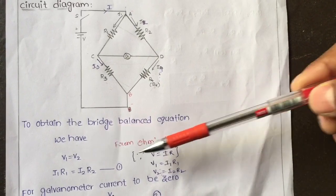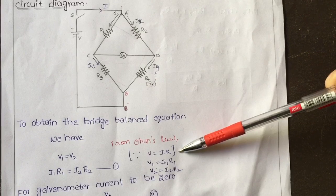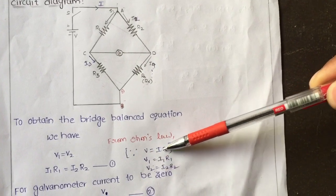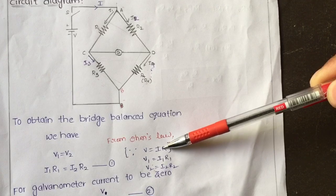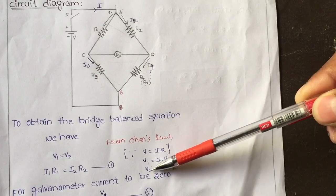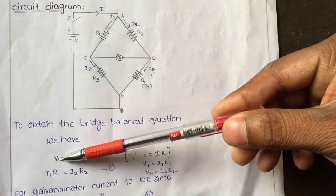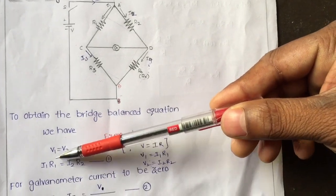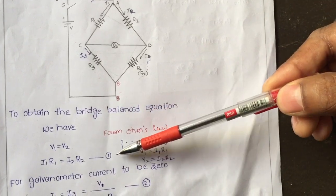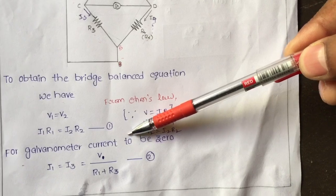From Ohm's law we know that V = IR, so in place of V1 we write I1·R1 and in place of V2 we write I2·R2. This gives us Equation 1: I1·R1 = I2·R2.